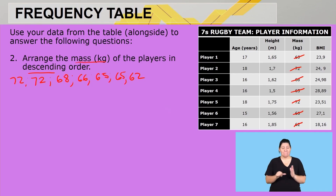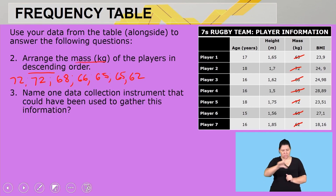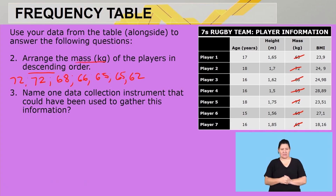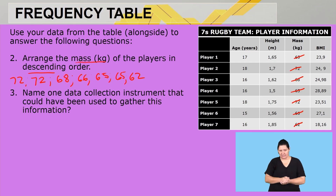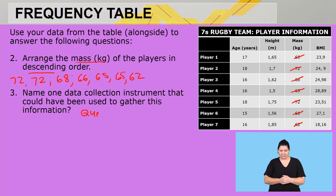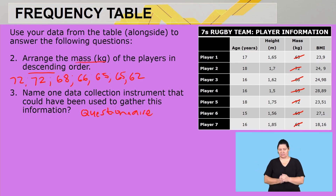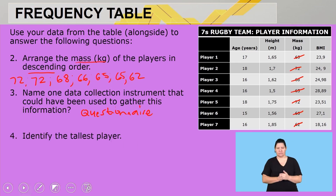Question three asks to name one data collection instrument that could have been used to gather this information. We could have given the players a questionnaire on which they answered specifics about their age, height, and so on.